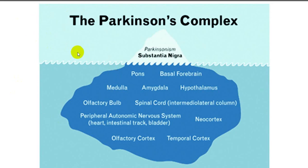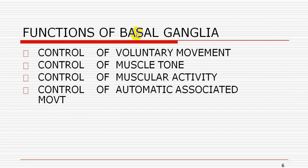Beyond substantia nigra, you can also have involvement of pons, other basal ganglia, hypothalamus, spinal cord, neocortex, temporal cortex, olfactory cortex, and olfactory bulbs — so sometimes you even get disturbances in smell and other cortical functions. The basal ganglia are responsible for control of voluntary movement, control of muscle tone, control of muscular activity, and automatic associated movements — hence we get disturbances in all these areas.